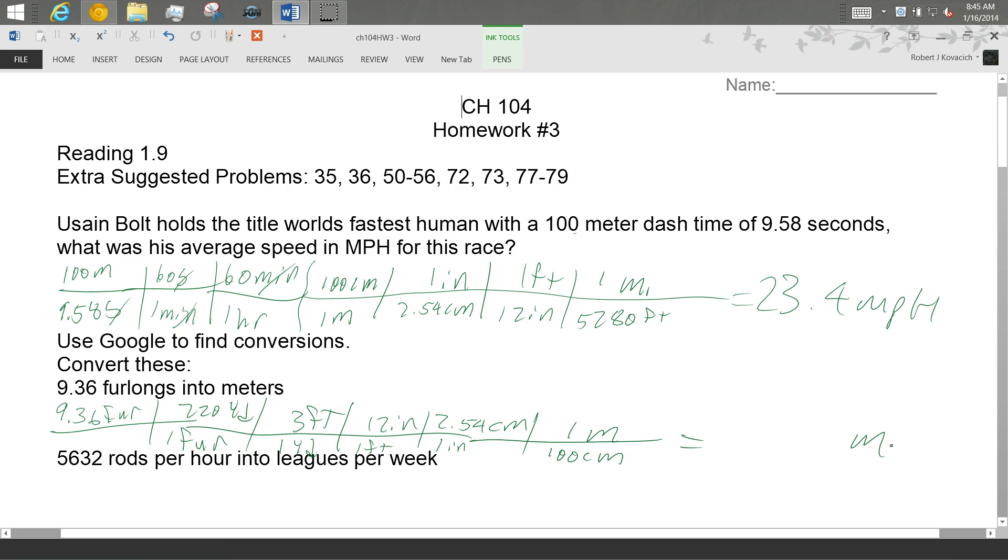So what do we got? 9.36 times 220 times 3 times 12 times 2.54 divided by 100. So I have three sig figs, and that's the answer that pops out of my calculator. 1,880 meters. Are you okay with that? How else could I write it? 1.88 times 10 to the third. Either of those are fine.